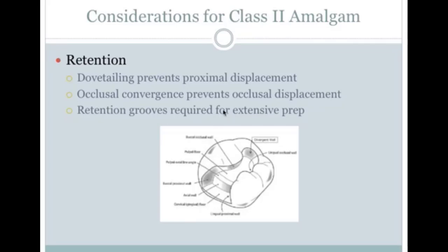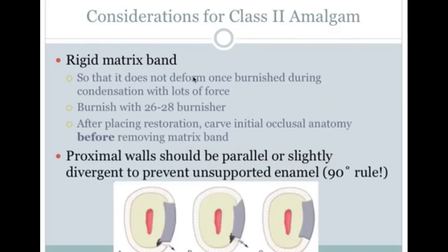For class 2 amalgam, occlusal convergence helps prevent occlusal displacement. You also need dovetailing — where the prep bends out in one direction — to help prevent displacement to the side. You also need a rigid matrix band that can hold its form, and an essential step is to burnish the matrix band against the adjacent tooth to give it a nice contour.